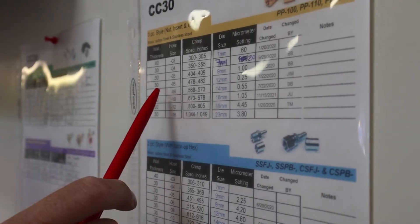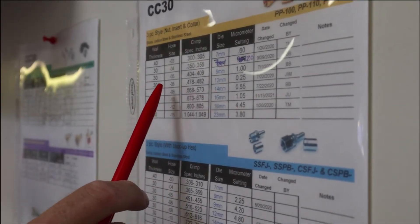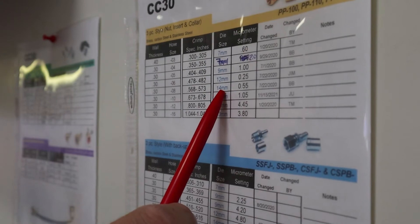Step 1. Inspect your crimp chart for your micrometer settings and the required die to use on the particular fittings you're crimping. The crimp specifications are the same for various materials being crimped.